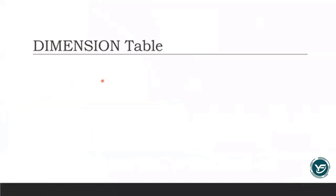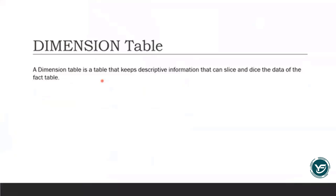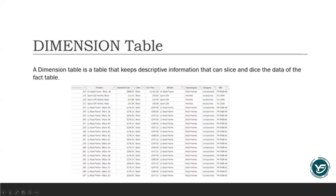So let's start with the basic theory — what actually is the dimension table? When we talk about the dimension table, it means it's a table that contains descriptive information which can be utilized to slice and dice the data from the fact table. There are two key keywords here: slice and dice. These are the actions that are required to be performed on the data, specifically on our fact table data.